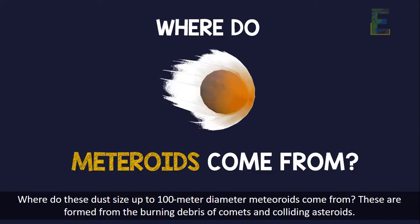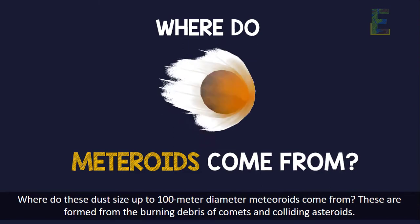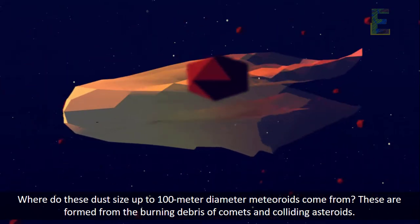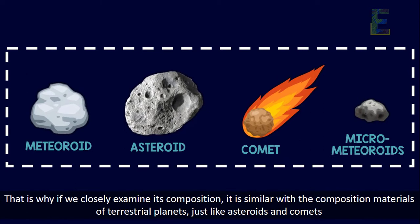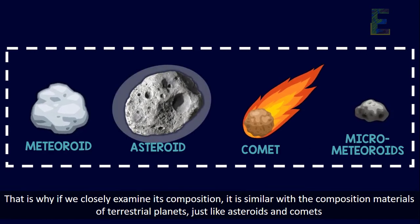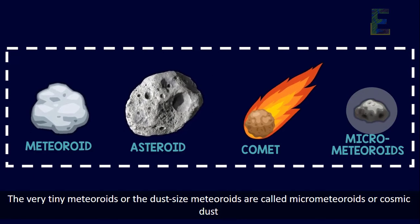Where do these dust-size up to 100-meter diameter meteoroids come from? These are formed from the burning debris of comets and colliding asteroids. That is why, if we closely examine its composition, it is similar to the composition materials of terrestrial planets, just like asteroids and comets. The very tiny meteoroids, or the dust-size meteoroids, are called micrometeoroids, or cosmic dust.